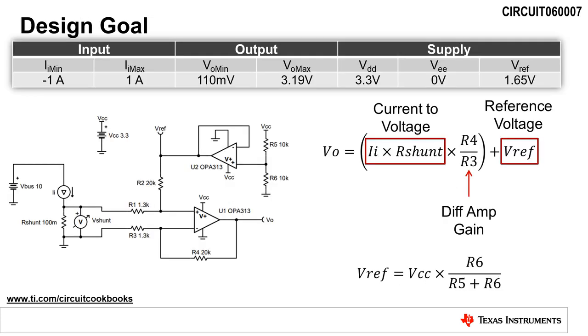The transfer function of this circuit is composed of three parts. First, the sense resistor, or R shunt, converts the load current, I sub I, into a voltage based on the value of its resistance. This voltage is called the shunt voltage, or V shunt. V shunt is then amplified by the gain of the difference amplifier, which simplifies to R4 divided by R3, when R1 is equal to R3 and R2 is equal to R4. Lastly, the reference voltage biases up the output voltage to mid-supply, since the load current is symmetrical.